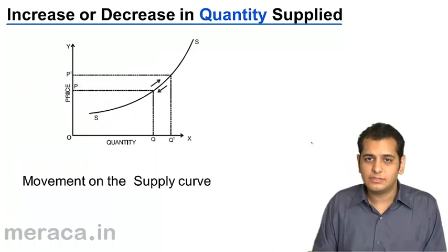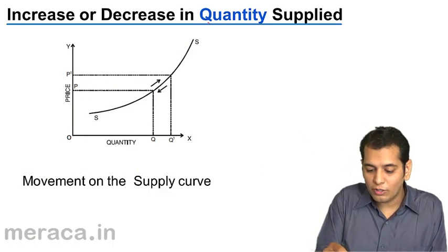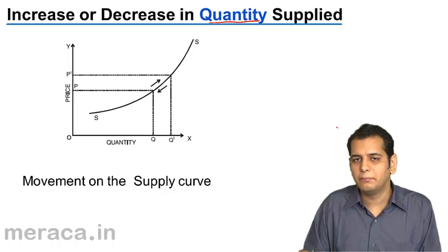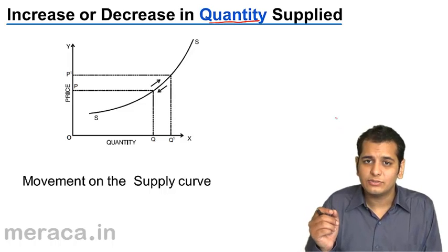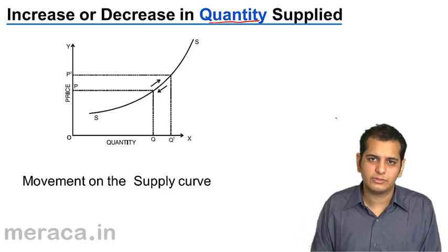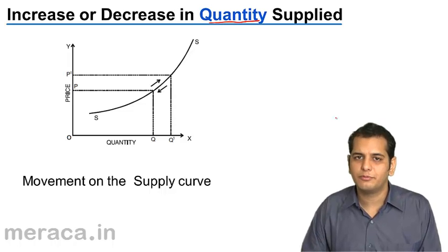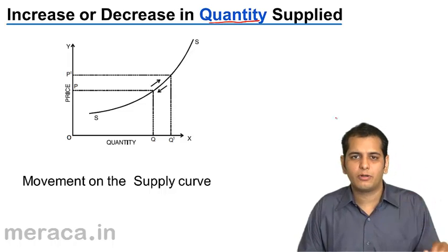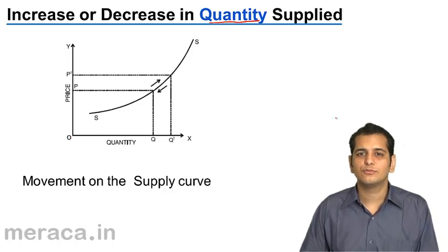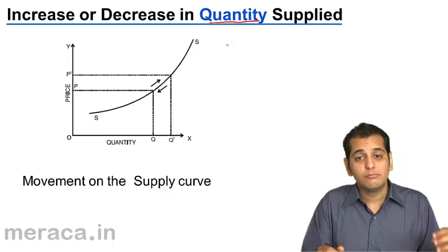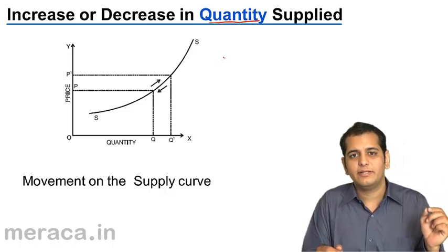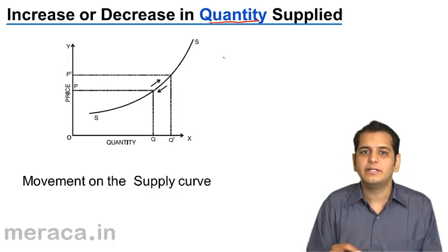Now let's see what is change in quantity supplied. Change in quantity supplied means the change in the quantity of supply because of a change in price. We have seen that there is a direct relation between price and supply — as the price of the product goes up, the supply also goes up, and when the price falls, the supply also falls. So when supply changes because of price, we say that there is a change in the quantity supplied.